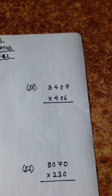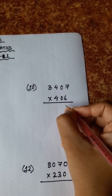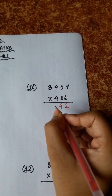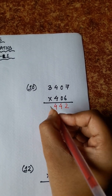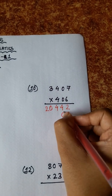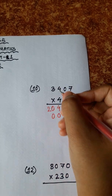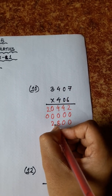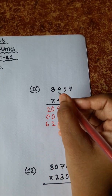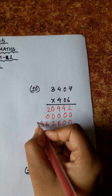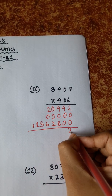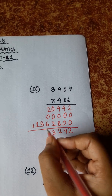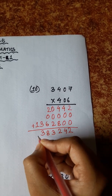Number 10: 3407 multiplied by 406. 7 sixes are 42, carry 4. 6 zeros are zero, plus 4 is 4. 4 sixes are 24, carry 2. 6 threes are 18, plus 2 is 20. 7 fours are 28, carry 2. 4 fours are 16, carry 1. 3 fours are 12, plus 1 is 13. 8 plus 4 is 12, carry 1. 2 and 1 is 3. 6 plus 2 is 8. Final: 1,383,242.